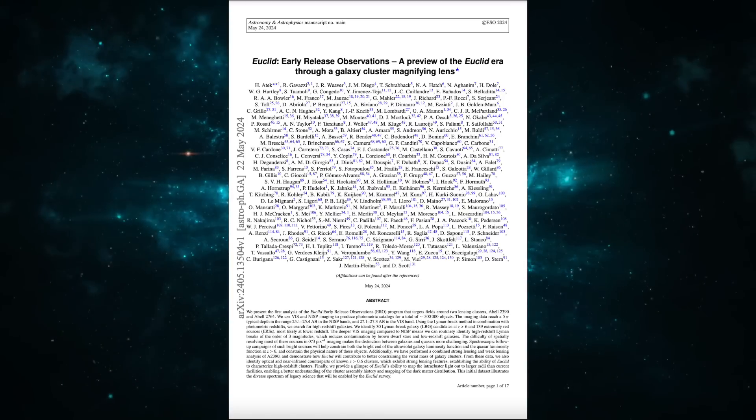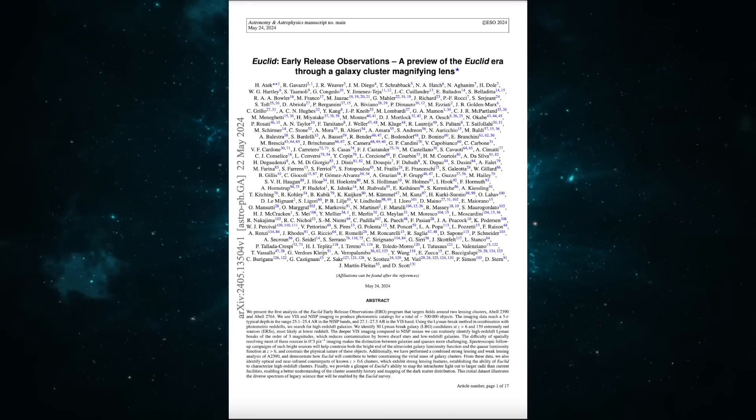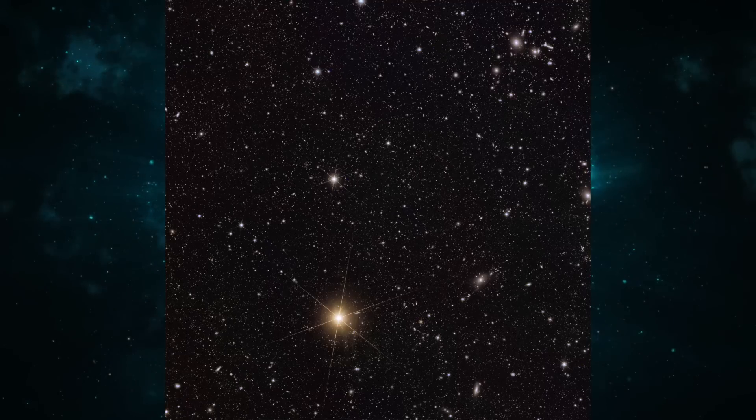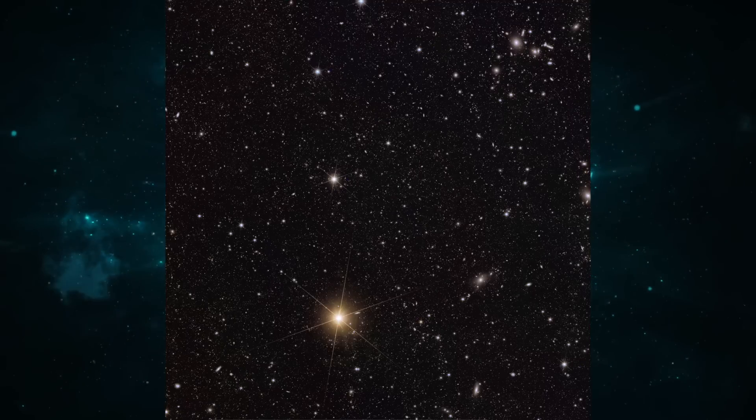Abal 2390 was the prime target in their early release observation paper, a preview of Euclid era for a galaxy cluster magnifying lens. But it's not the only one. The other prime target is another Abel cluster, Abel 2764. And they also made this round of released images.